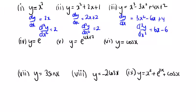In number 4, I'm going to change it to 2e to the power 2x, otherwise it's not going to change. So dy dx is equal to e to the power of 2x times 2, or 2e to the power of 2x. And d squared y dx squared is equal to 2e to the power of 2x times 2, which is 4e to the power of 2x.